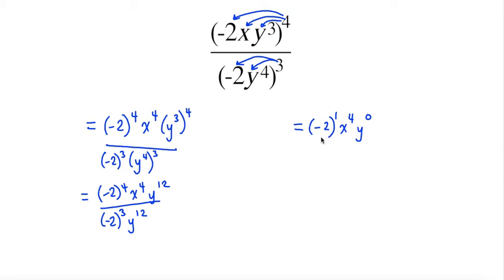So now I don't have any calculations that I need to do because I have an exponent of 1 left for my negative 2. So I'm going to have negative 2, and then x to the exponent 4.